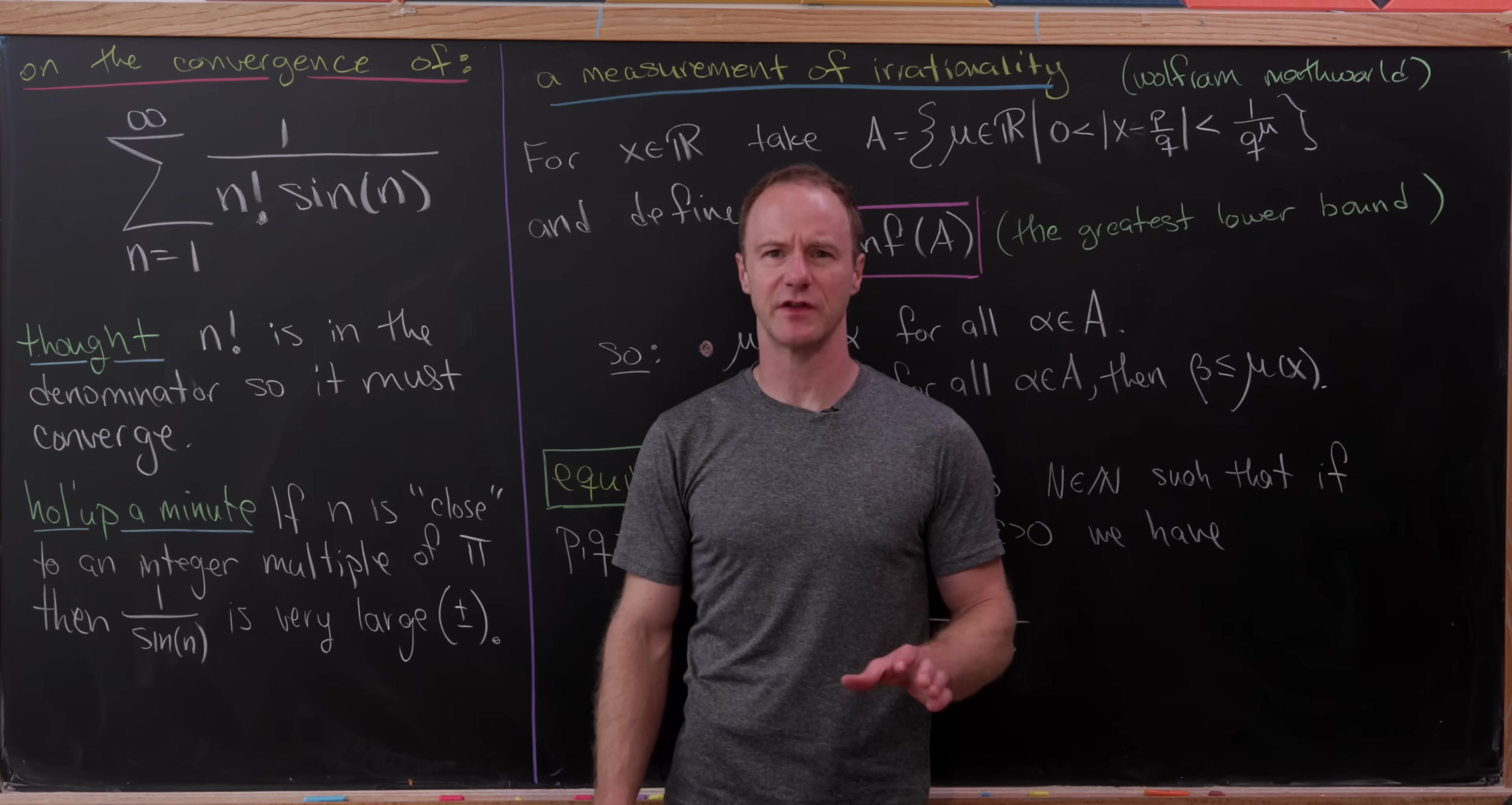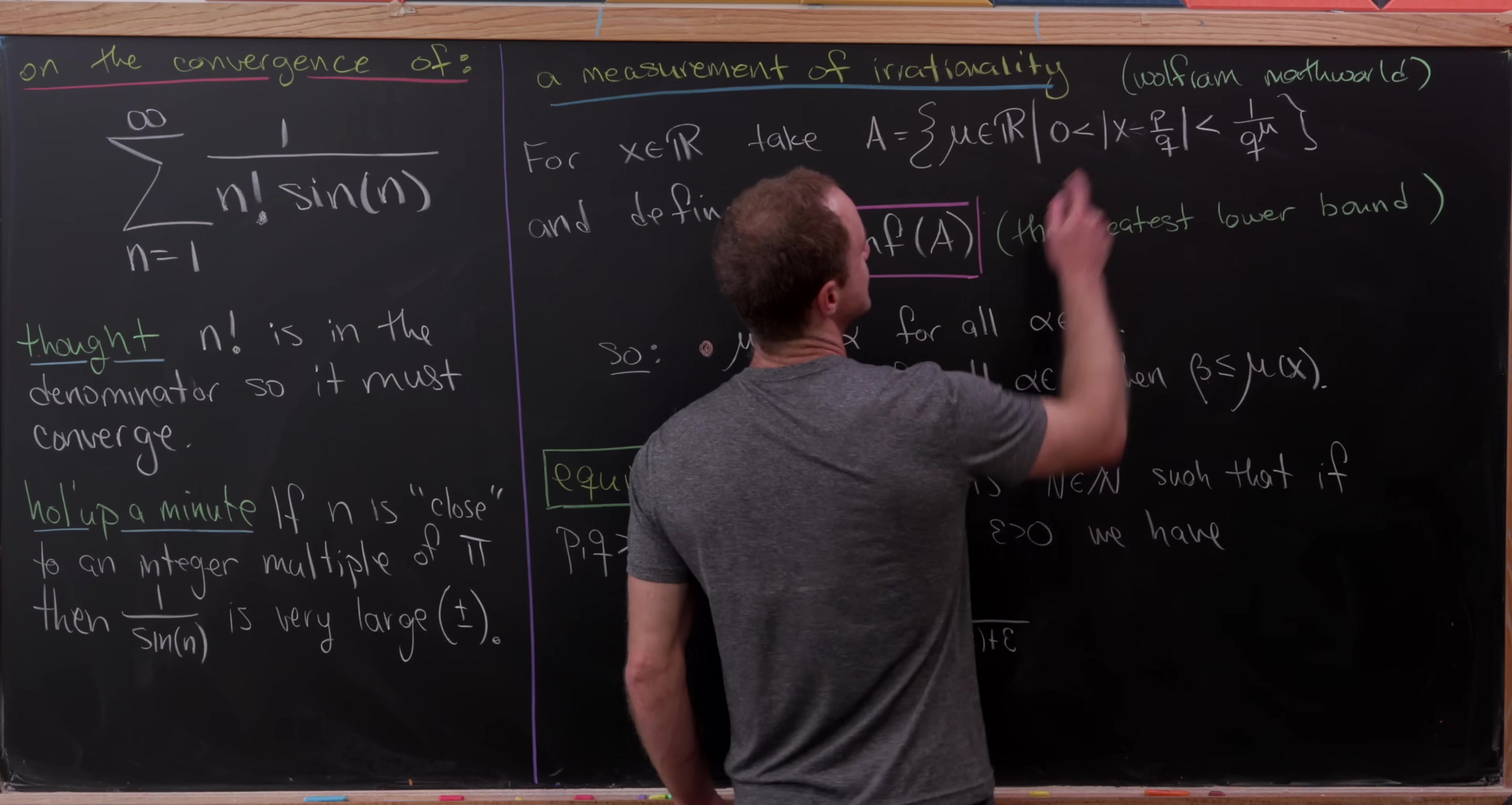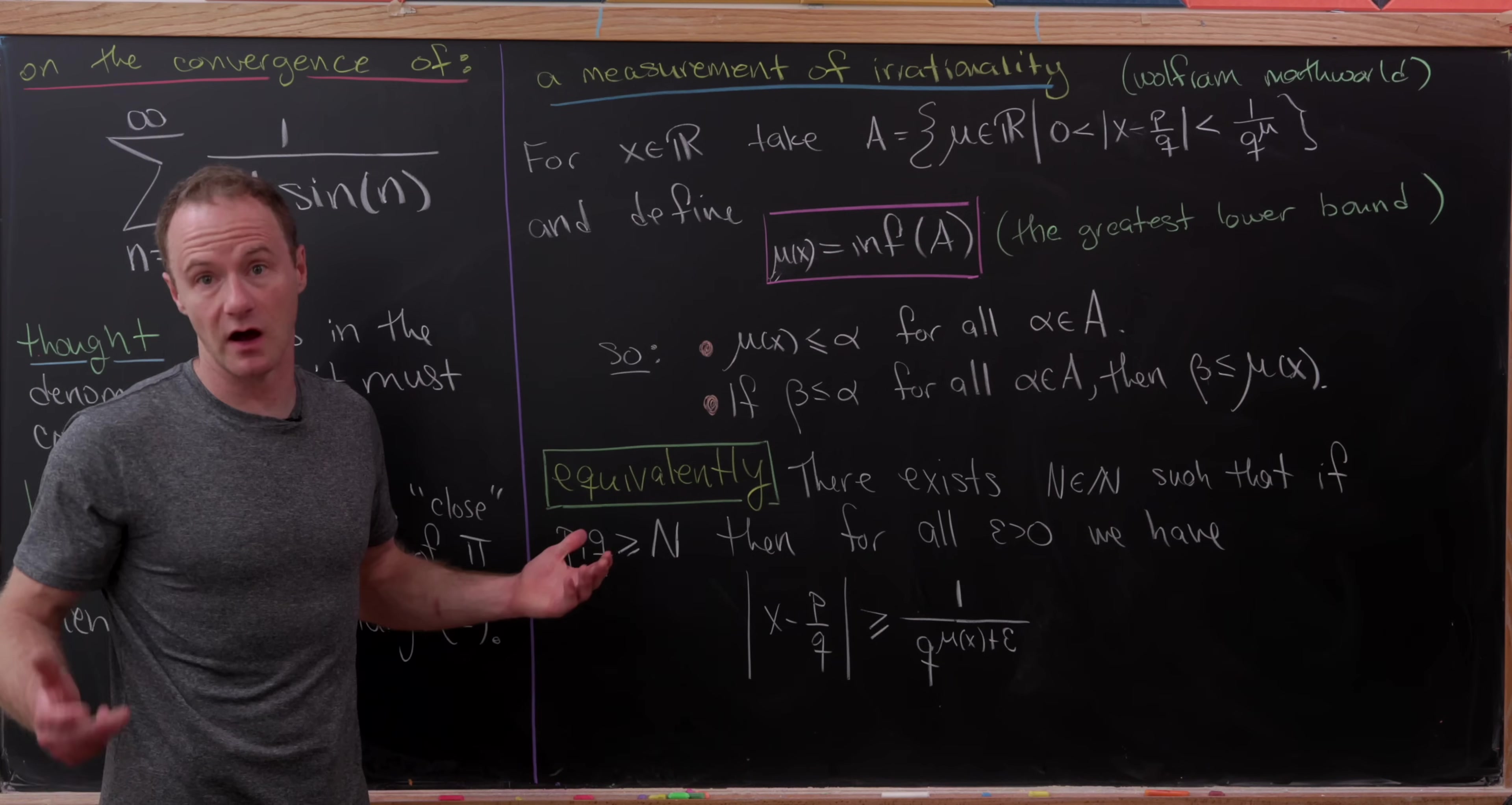How can we uncover the convergence of this series? We're going to have to look at something called the irrationality measure, or a irrationality measure as there are probably more than one. For a real number x, let's consider the set of all real numbers mu where the absolute value of x minus p over q is between 0 and 1 over q to the mu for all rational numbers p and q. We define mu of x to be the infimum of this set, the greatest lower bound.